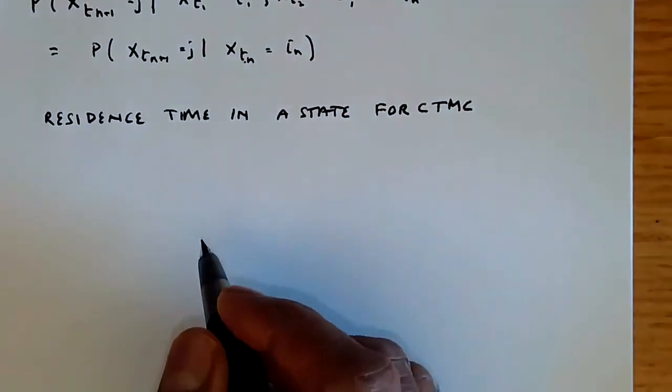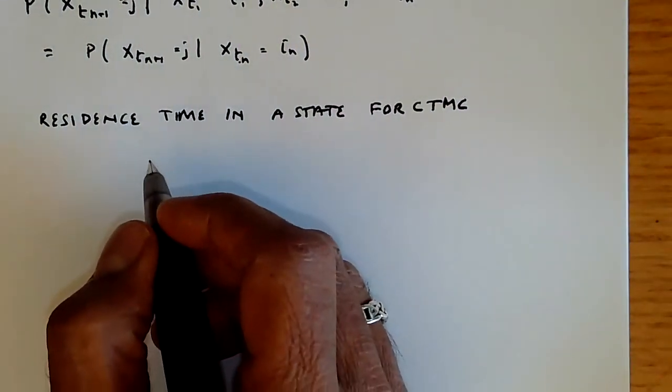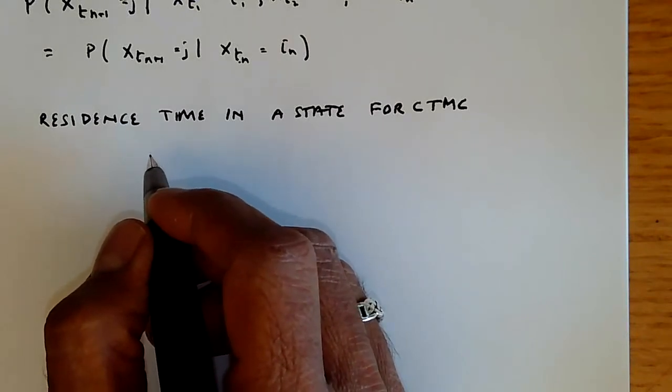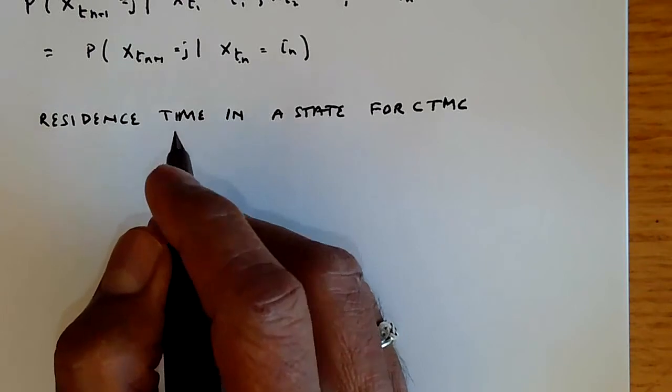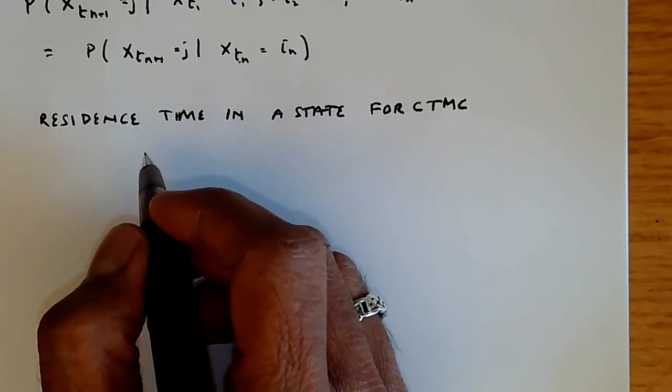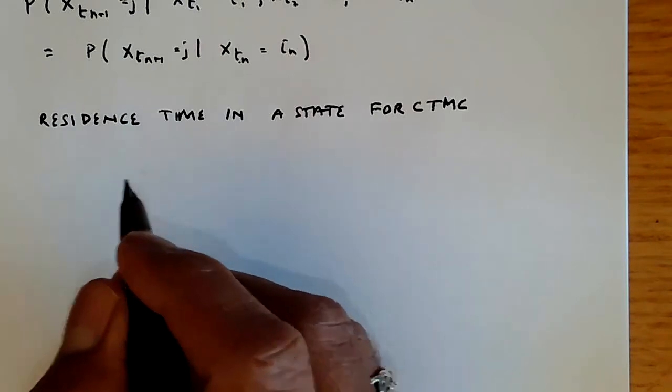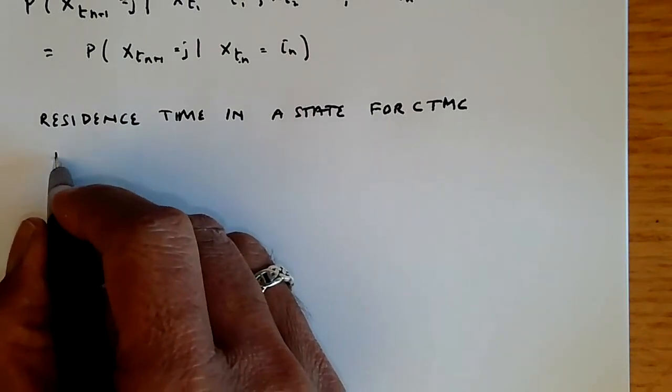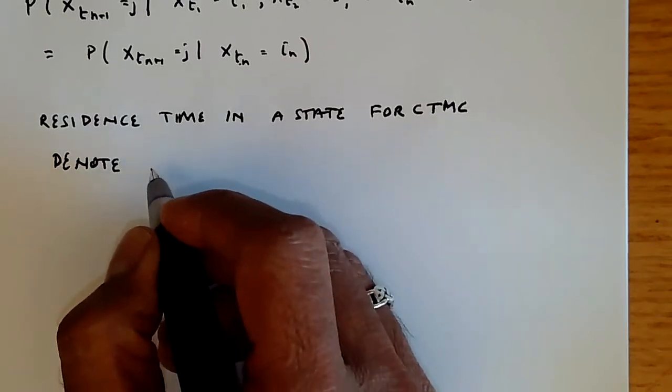We will just say that, analogous to the geometric property, the fact that the residence time is a geometrically distributed random variable for discrete time Markov chains, for the continuous time Markov chains, it will be an exponentially distributed random variable.